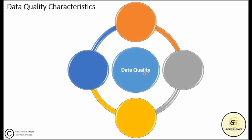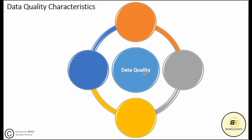For any dataset to be qualified as being of good quality it must possess some essential characteristics, including consistency. Quality data must be uniform, meaning data values in one dataset are consistent or in agreement with values in another dataset.